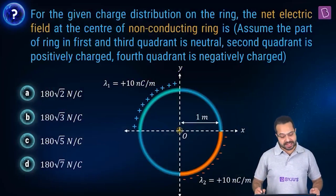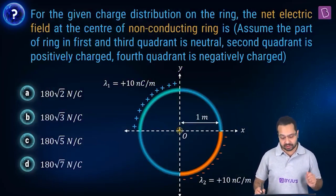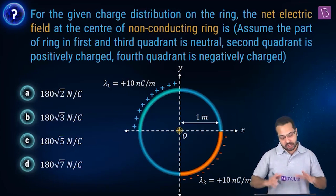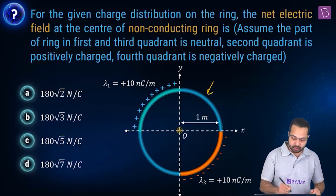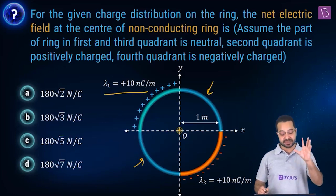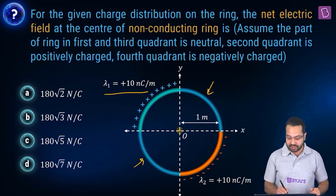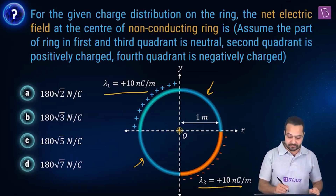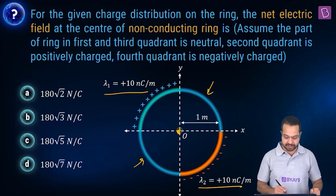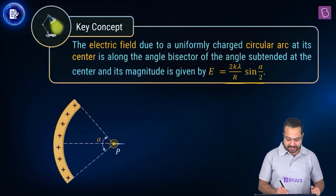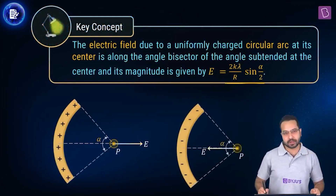Second problem: for a ring where the first and third quadrants are neutral, the second quadrant is positively charged with a density of 10 nanocoulombs per meter, and the fourth quadrant is negatively charged with the same magnitude. We need to find the net electric field at the center.